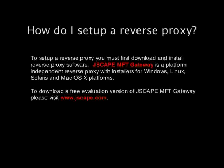Lastly, let's talk about how you set up a reverse proxy. To set up a reverse proxy, you must first download and install reverse proxy software. Jscape MFT Gateway is a platform-independent reverse proxy server with installers for all platforms, including Windows, Linux, Solaris, and macOS.